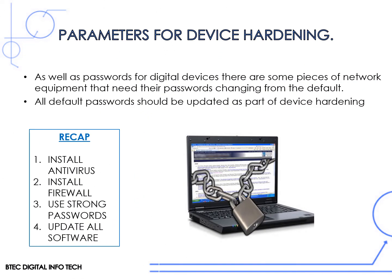In the last unit we looked at device hardening, which is the process you follow to ensure that a system is secure. The parameters for device hardening is a list of things you should do to make sure the device is secured. As well as user passwords, there are pieces of network equipment that also need their passwords changing from the default.